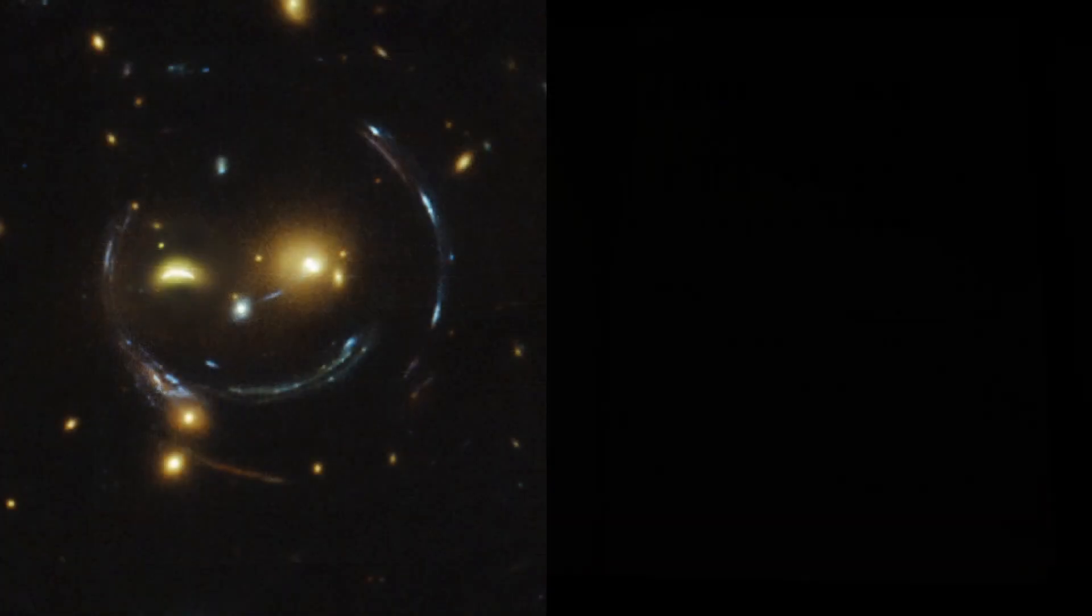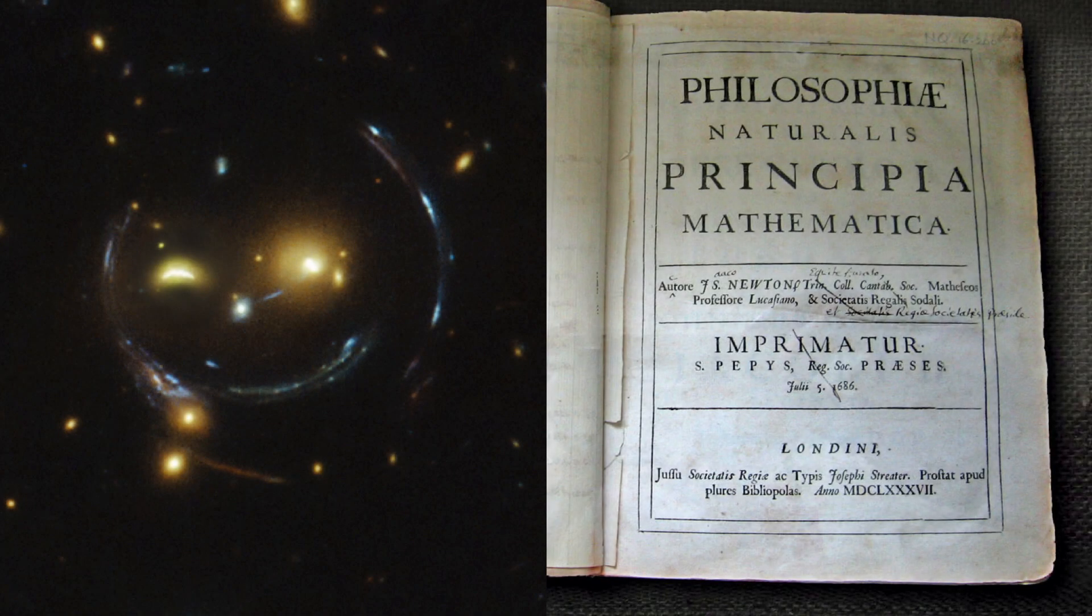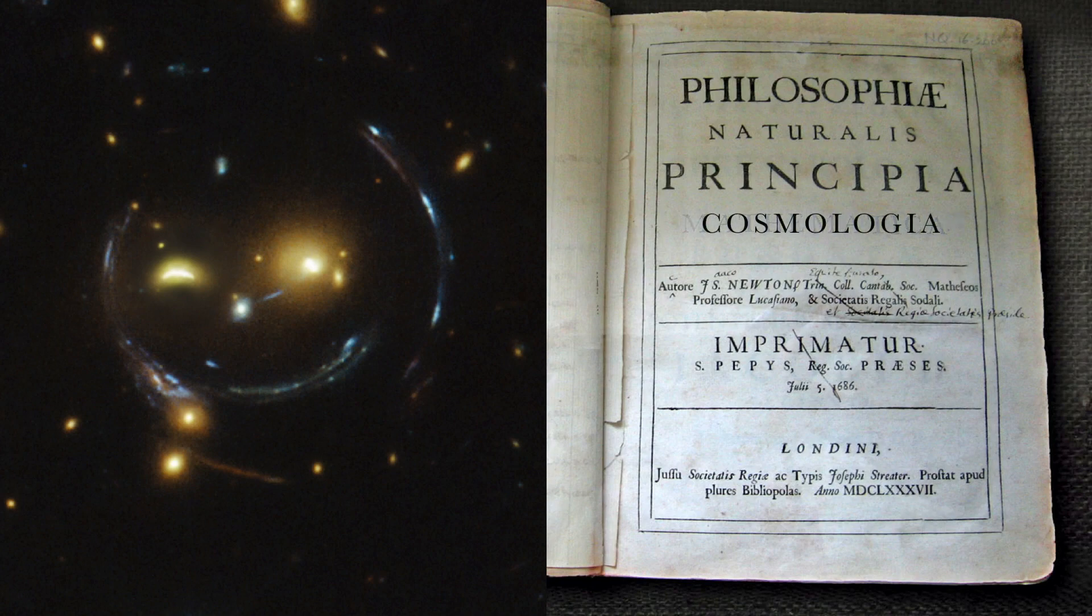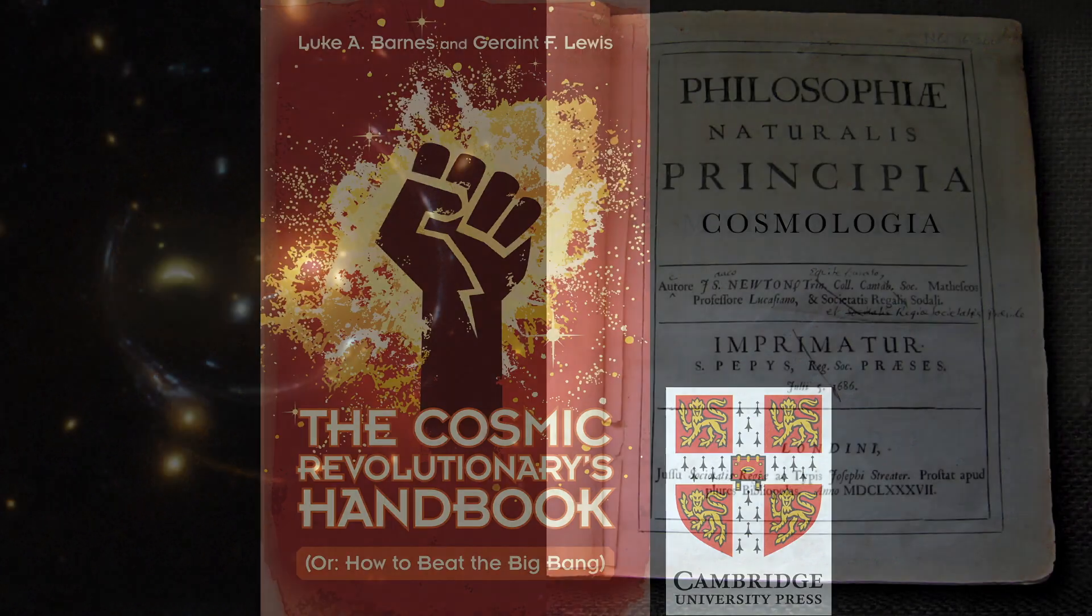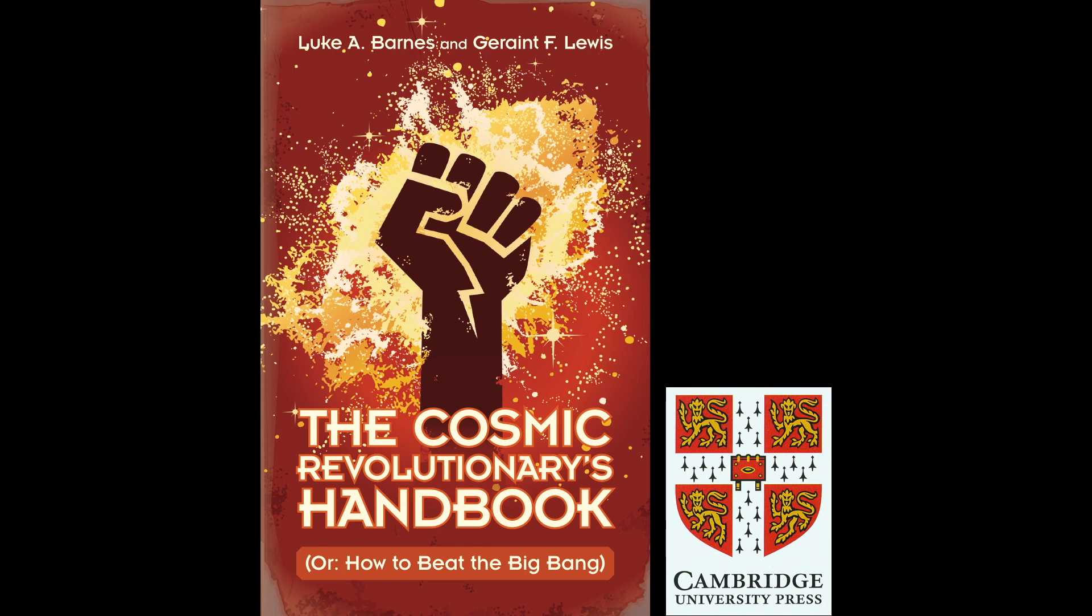If you've ever wondered about the weird universe of modern science, or if you've got your own master theory of the universe ready to cause a revolt, then this is the book for you. The Cosmic Revolutionary's Handbook, or How to Beat the Big Bang, will take you inside modern science, sort fact from theory and theory from speculation.